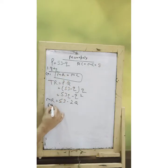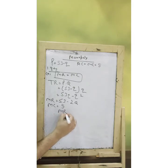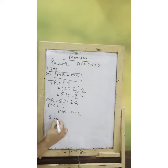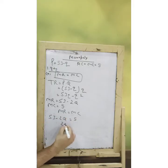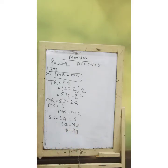As far as MC is concerned, it is given as 5. Setting MR equal to MC — that is, 53 minus 2Q equal to 5 — and solving, I get the quantity as 24.